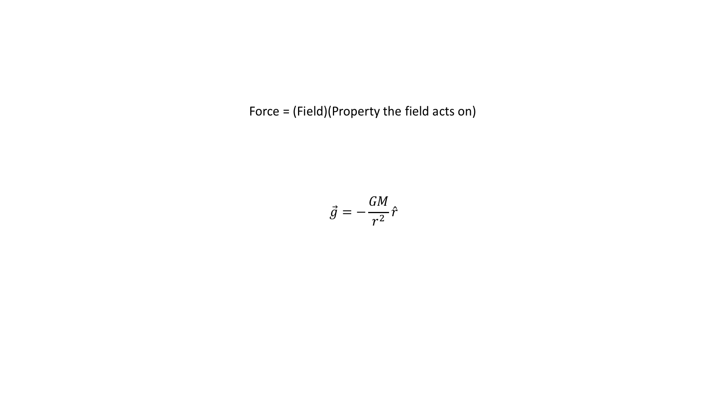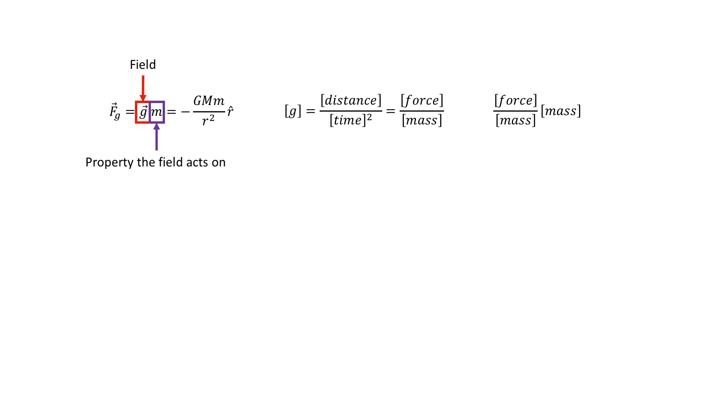In the case of the gravitational field, this property is mass. So to get the force, we multiply the field by the mass. Using dimensional analysis, this becomes more obvious. The gravitational field has dimensions of distance per time squared, or acceleration, but we can also see this as a force per unit mass. As the gravitational force is the product of the gravitational field and the mass in the field, we can take those dimensions and multiply them by mass to get force.